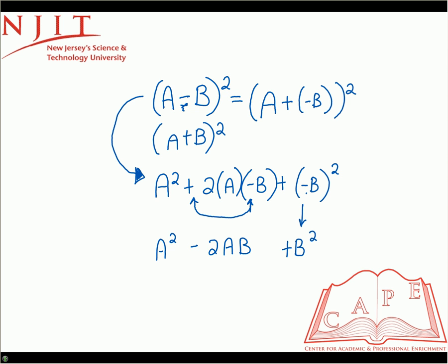As you can notice, the only difference between this one and the original one was that the second term, or the middle term, is a minus 2AB as opposed to a positive 2AB. Other than that, it's the only difference. So we're going to do one example like that, and then you should be in good shape.